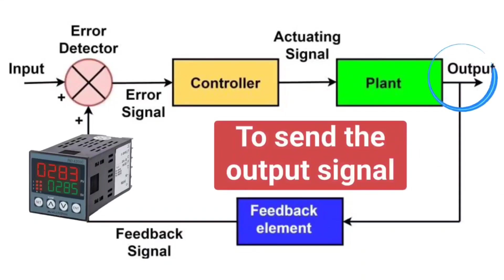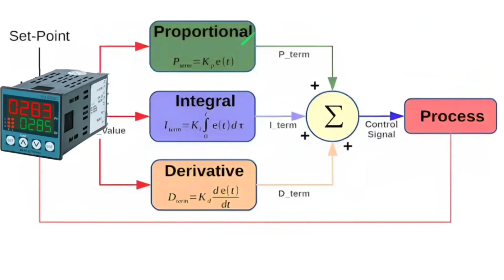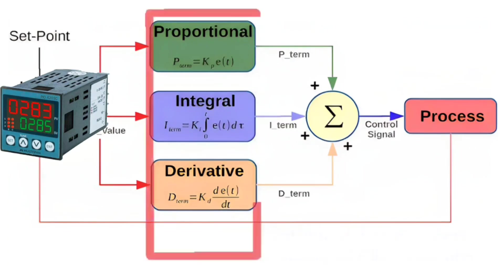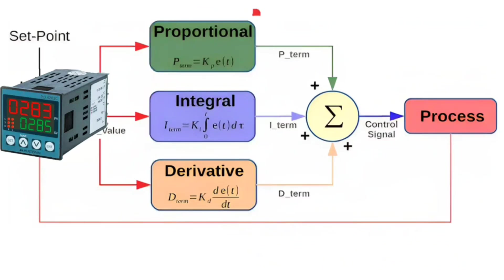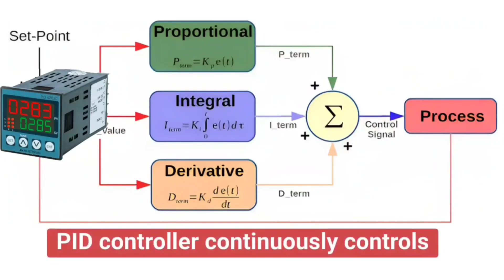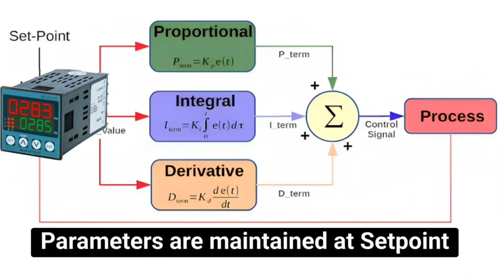To send the output signal, PID controllers' P means proportional, I means integral, and D means derivative actions are used. These values are set. Settings of these values is the tuning of PID controller. After properly tuned, the PID controller continuously controls the process and parameters are maintained at set point or nearby the set point.